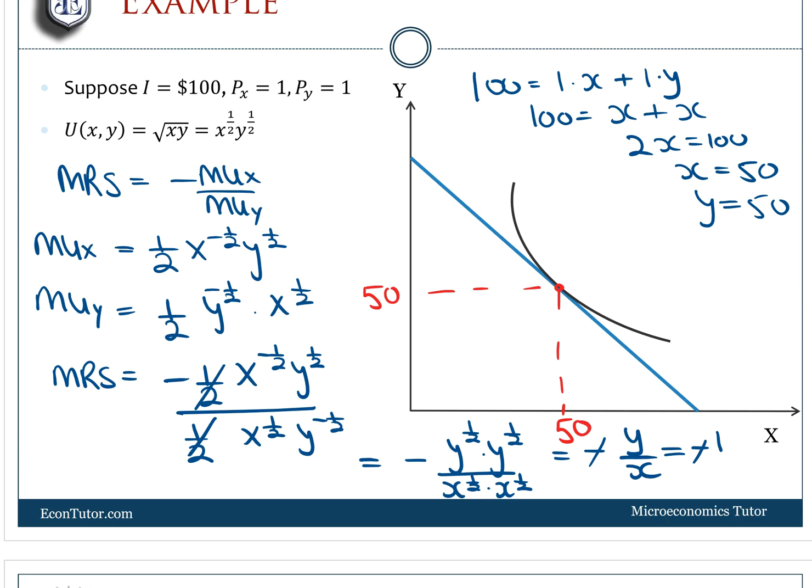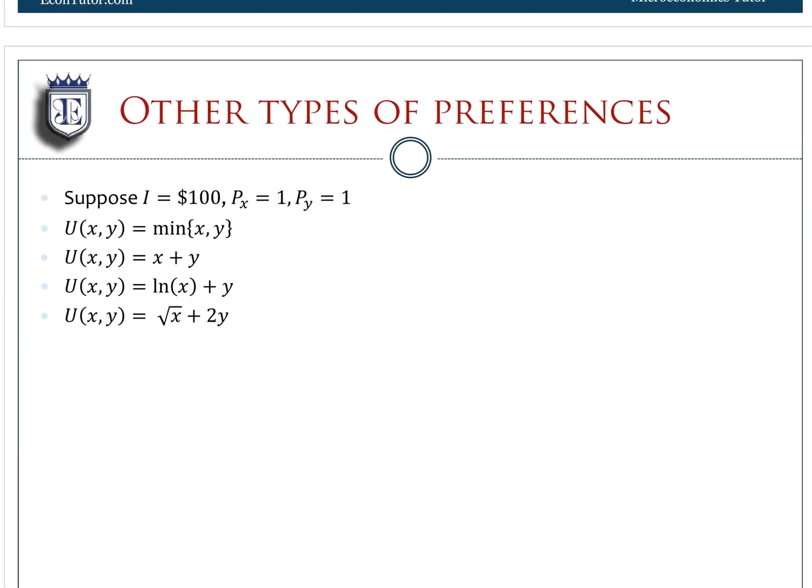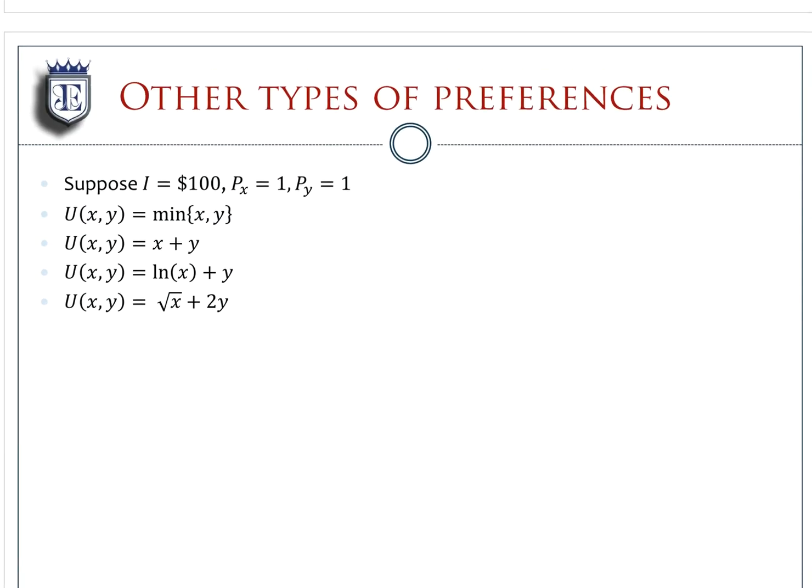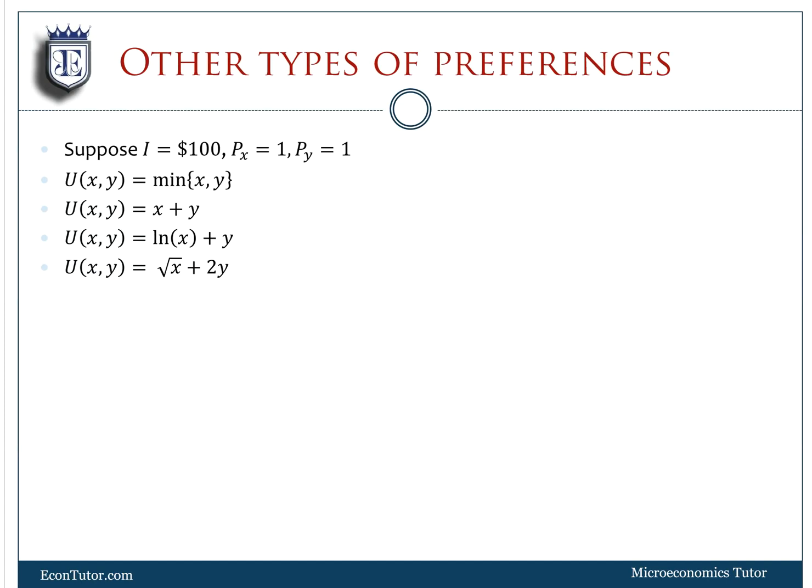But this was only for Cobb-Douglas. We have other types of preferences. For instance, this is perfect complements, this is perfect substitutes, these are quasi-linear. In the next couple of tutorials, we're going to talk about maximization with these preferences.